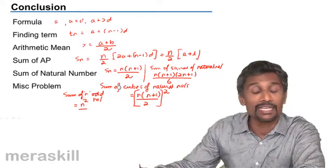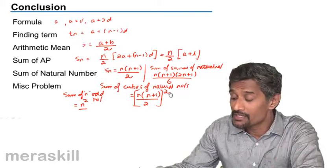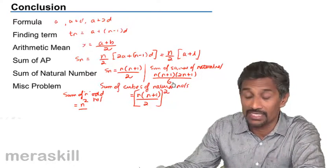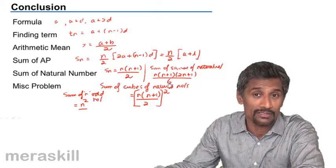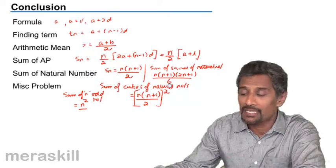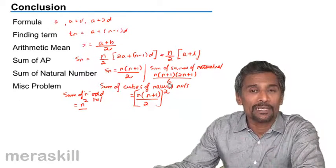Also remember what we did about consecutive terms: five consecutive terms, three consecutive terms, four consecutive terms, six consecutive terms - what can we assume the terms of that arithmetic progression as. This is how we can take up questions based on arithmetic progression.